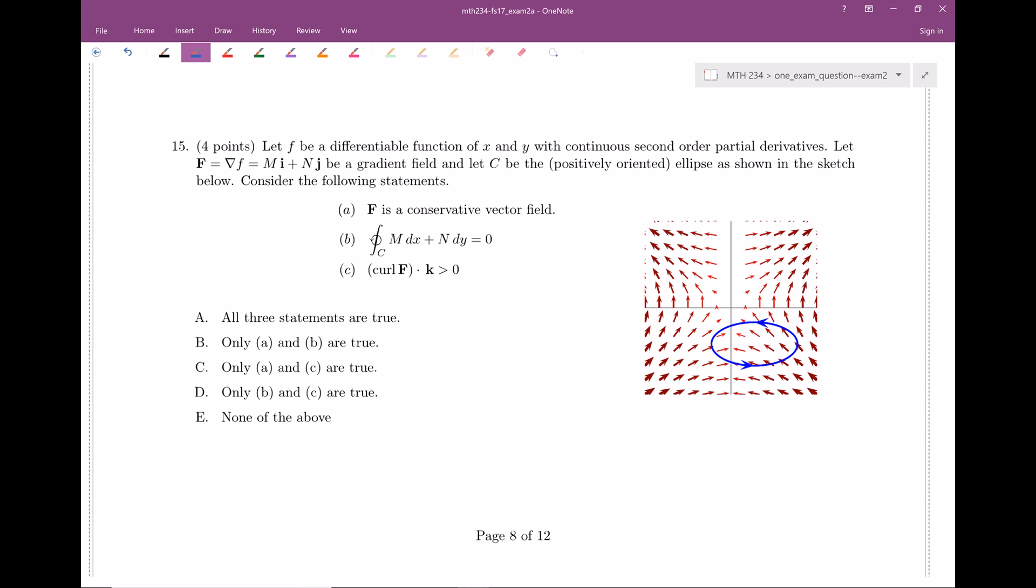We have a vector field F, which is the gradient of this little f, this nice differentiable function, and maybe it has components M and N. That's a little bit different. Usually we use p's and q's, but fine. M and n. Okay, this is the gradient field. C is a nice positively oriented ellipse. There it is. How nice.